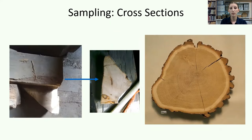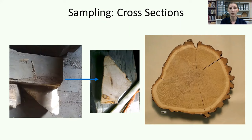So how do researchers obtain tree ring data? They usually collect one or more cross-section or core samples from wood in the object, structure, or forest under study to measure and analyze their rings. Investigators try to take samples that end in bark or close to the bark, indicating the presence of the final growth ring and revealing the felling date of the tree. If people used the wood soon after felling, or after only a short interval for seasoning, the construction date closely follows the felling date.